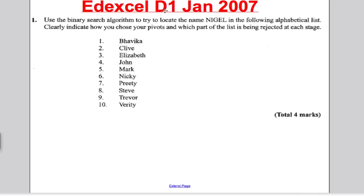This was from January 2007. It says use the binary search algorithm to locate Nigel in the following alphabetical list, showing clearly how you chose your pivots and which part of the list is being rejected at each stage. Now clearly, if you look down the list, Nigel's not in there. You can't just state Nigel's not in there, you have to perform the algorithm. So the first thing I would do is write down the names.